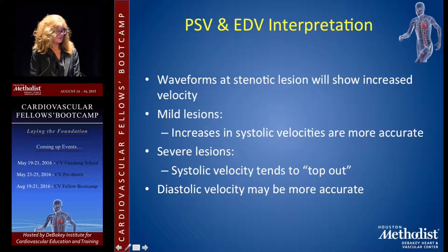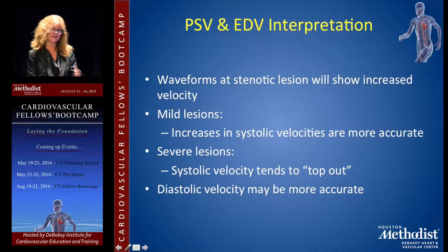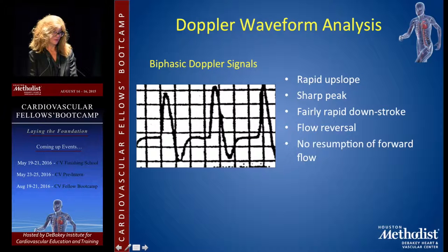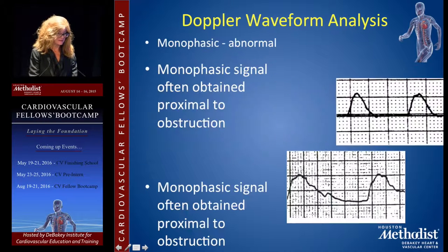Waveforms at a stenotic level show increased velocities — just as narrowing a garden hose increases velocity, the same applies to arteries. In severe disease, peak systolic velocity plateaus and you won't see values above 400-500; you simply won't find 800 or 900. Triphasic arterial Doppler signals are normal, biphasic indicates one level of disease, and monophasic indicates multiple levels of disease — though monophasic can be abnormal with either proximal obstruction or collateral flow.